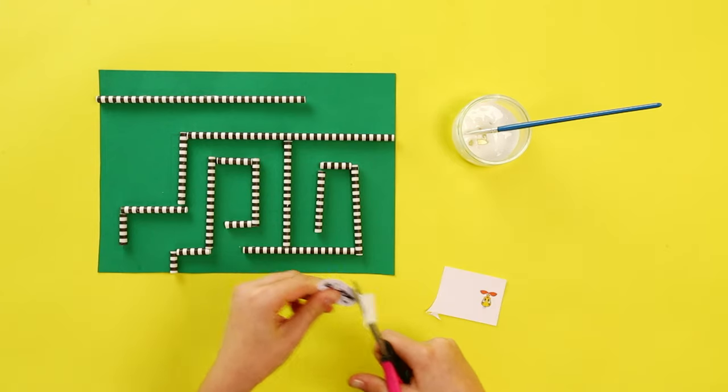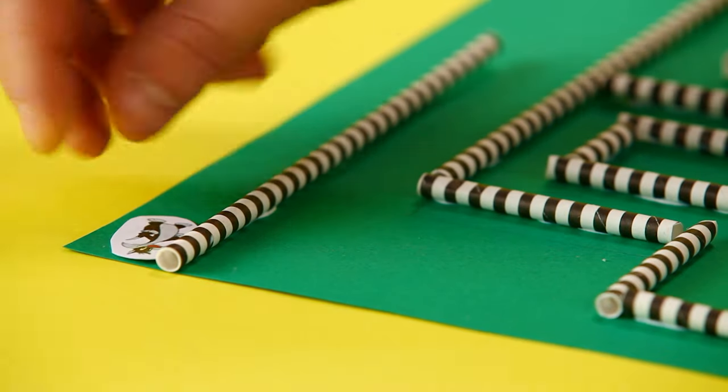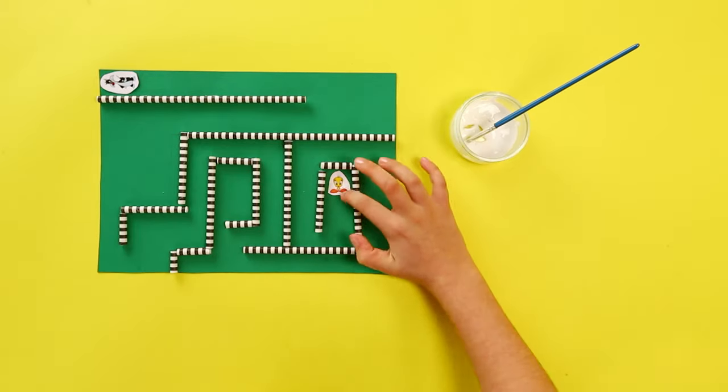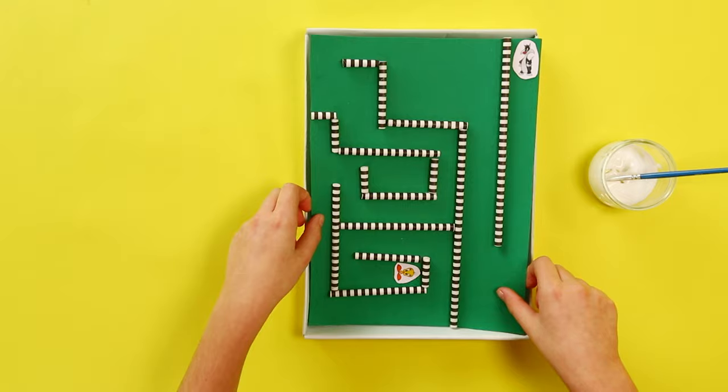Now to add the final touches. Cut out your characters and glue them to the start and end of your maze. Take your shoebox lid and stick your maze to the bottom of it.